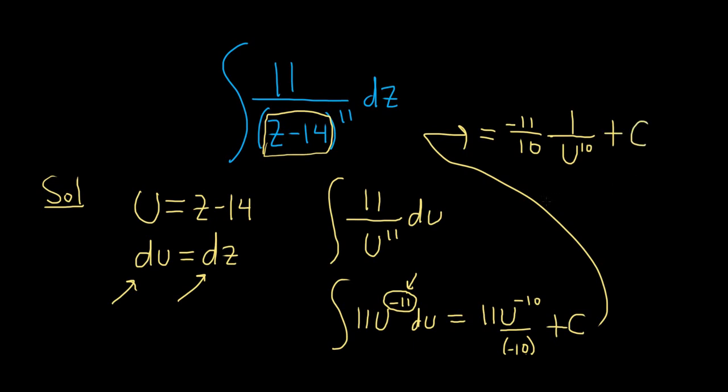For some reason, I feel like the 11 is making this problem harder. And this is negative 11 over 10. I don't like it. Times, and then 1 over, and then u was this piece here. So z minus 14. This is a really good problem.